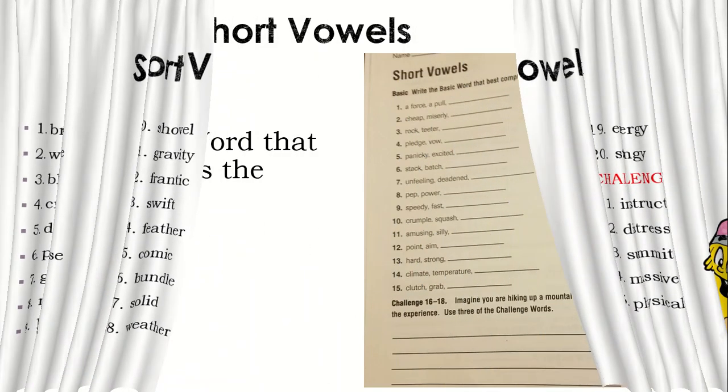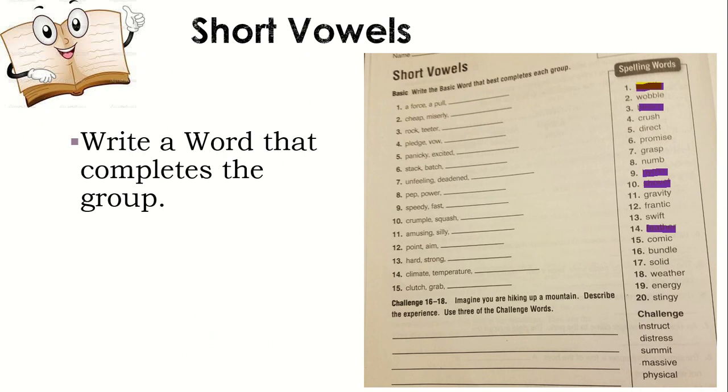Okay, we will work on page number four on your practice book. I already deleted the words you won't use. The ones in purple will not be used in the activity. Write a word that completes the group. The first word says a force, a pull. A force, a pull is gravity. Gravity. Cheap, misery. To be cheap or miserly is to be stingy. So you will write with black pen, gravity, stingy.